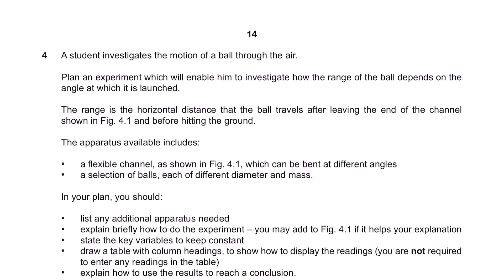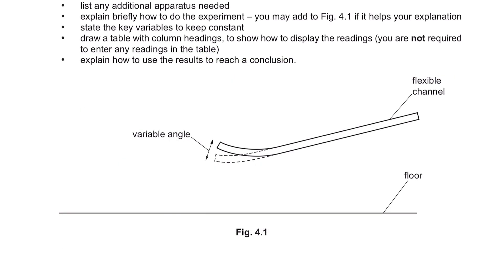Question 4. A student investigates the motion of a ball through the air. Plan an experiment which will enable him to investigate how the range of the ball depends on the angle at which it is launched. The range is the horizontal distance that the ball travels after leaving the end of the channel shown in figure 4.1. What happens here is the ball rolls down and it gets launched. The range is then determined by the distance that it travels once it lands. To change the angle, we will place a protractor here and change the position of the flexible channel to obtain different angles.